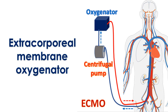E-CPR is provided by a machine known as an Extracorporeal Membrane Oxygenator, kept beside the person. The main parts of the machine are a centrifugal blood pump and a membrane oxygenator which enriches the blood with oxygen. Venous blood with low oxygen content is removed from the body using a small tube placed in the vein in the groin.